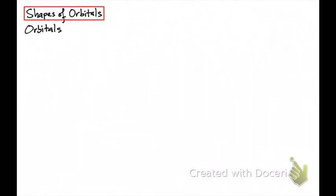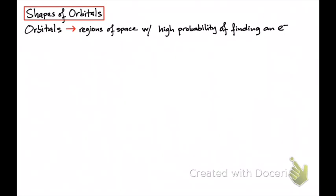The other thing I want to talk about regarding orbitals is their shape. The shape of the orbitals is actually a mathematical or statistical representation, because orbitals by definition are regions of space with a high probability of finding an electron. Quantum mechanics is also known as statistical mechanics because it uses a lot of statistics, and probability is basically statistics.